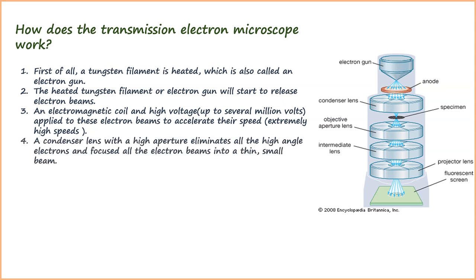A condenser lens with a high aperture eliminates all the high-angle electrons and focuses all the electron beams into a thin, small beam.